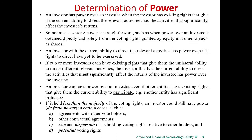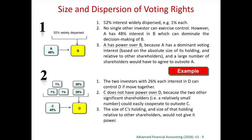We need to determine power in fact if we have got less than the majority of the voting rights. Let's consider the size and dispersions of the voting rights. For example, in scenario 1, A has got 48% of B. Because we have got less than 50%, we cannot say that we have got the power. Therefore, we will consider all other facts and circumstances.